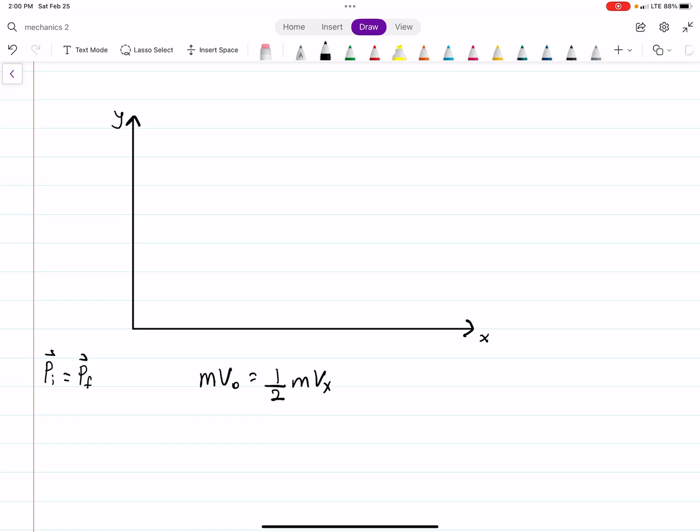Since the mass broke up into two equal pieces, the final momentum will have half the mass of the original shell. This tells us VX equals two times V0. So this is for the X direction.